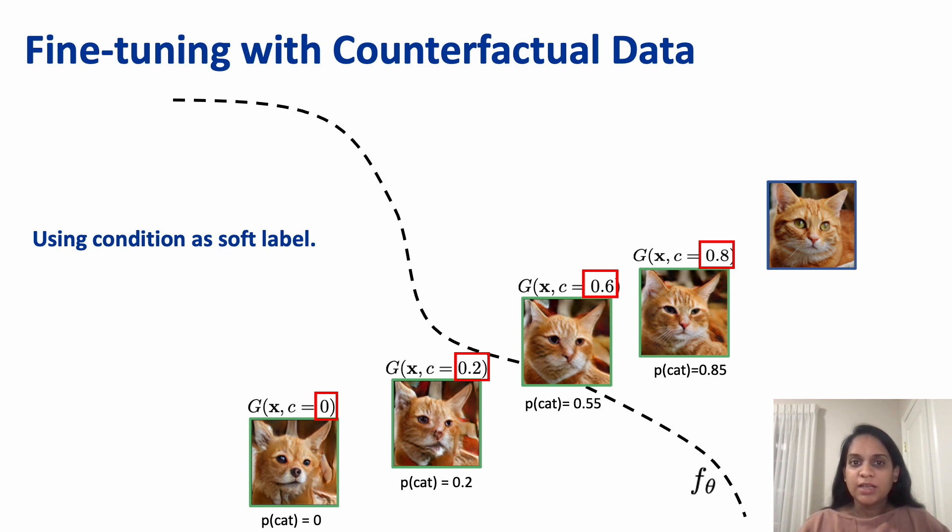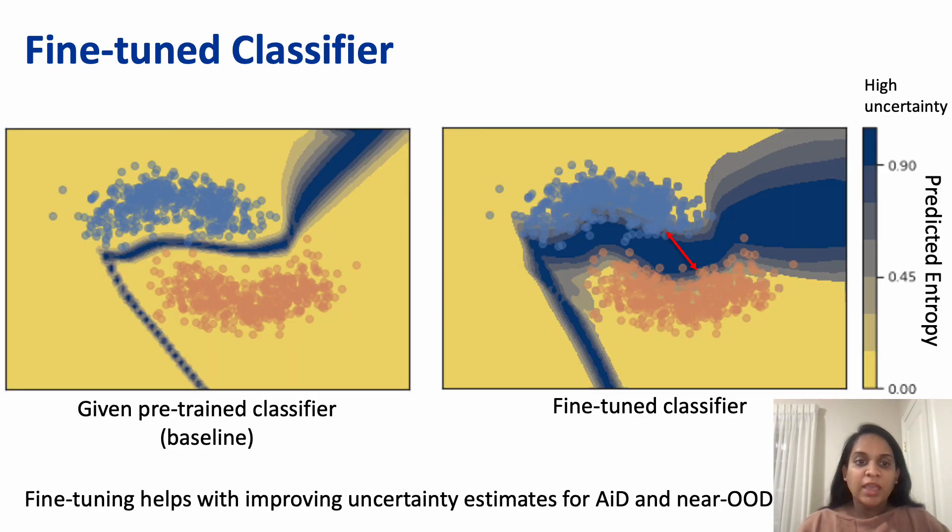To fix the classifier, we propose fine-tuning using this generated counterfactual data while considering the condition used in the generation as soft label. This condition mimics the distance of the data point from the decision boundary. Here we show the uncertainty landscape of the classifier after fine-tuning. Fine-tuning helps in improving the uncertainty estimates of AID and near OOD samples.